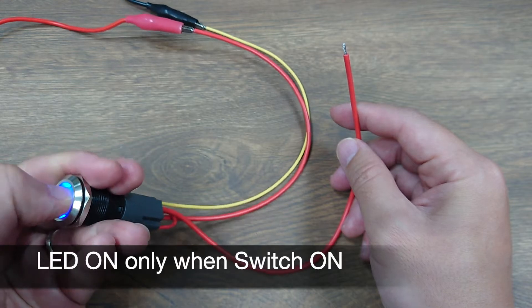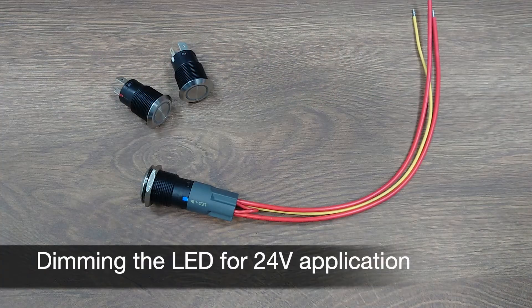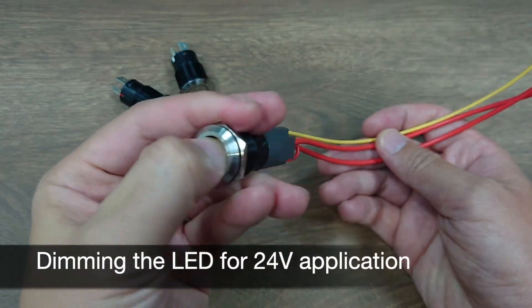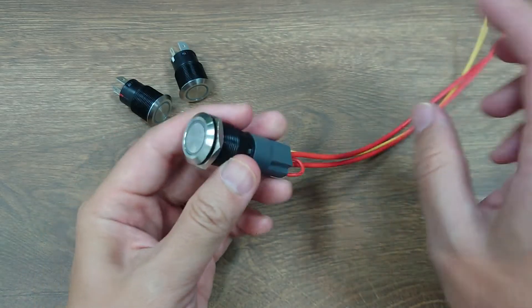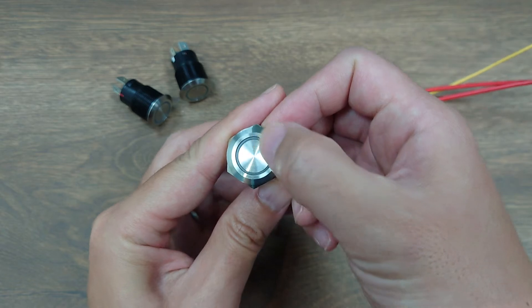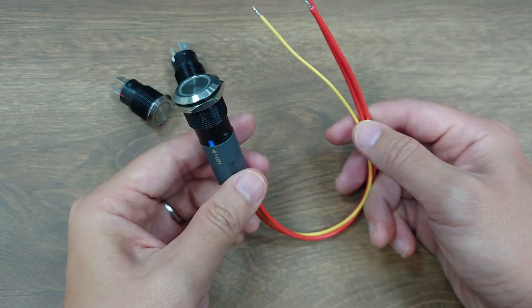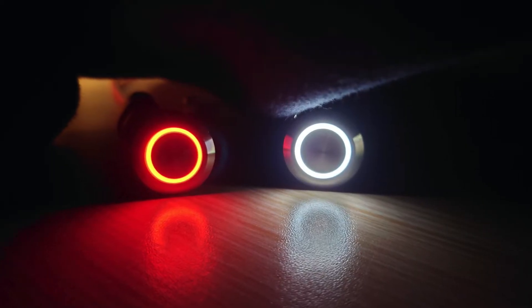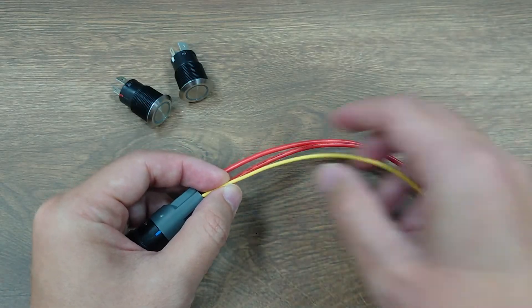The switch contacts inside are designed for DC 12 volt 20 amp and DC 24 volt 10 amp. However, the LED inside is designed for DC 12 volt only. So if you want to use the switch for 24V applications, or if you find the LED ring is too bright in the dark, you can connect a resistor in series with the LED negative cable.